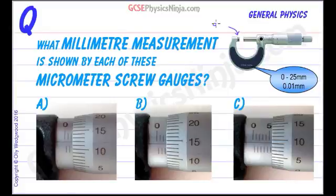We've got something called the anvil, we've got a spindle, we've got a sleeve, a thimble, and a ratchet.